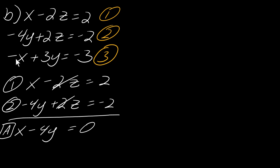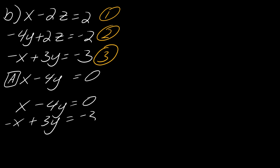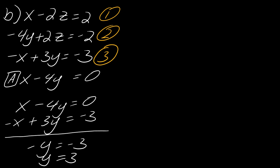Notice that I'm left with an equation in terms of x and y. And the third equation — the one I haven't touched yet — is already in terms of x and y. So this is the twist with three equations that are missing variables: you don't need to eliminate again. You can just take this equation together with the one you already made. So I now have x minus 4y equals 0 and negative x plus 3y equals negative 3, which is already set up for elimination.